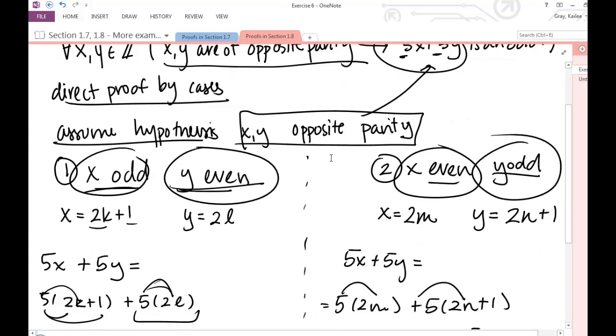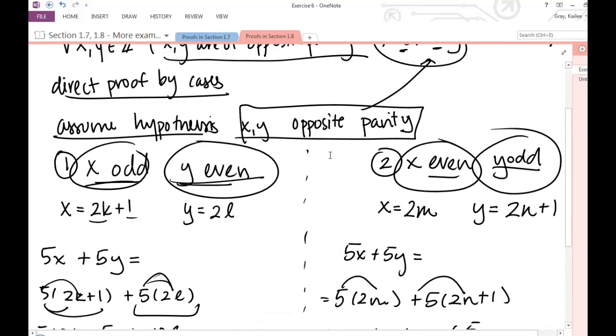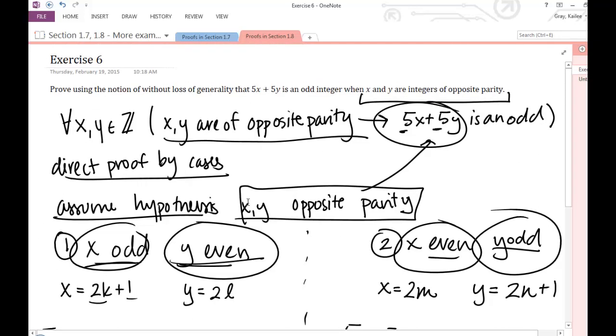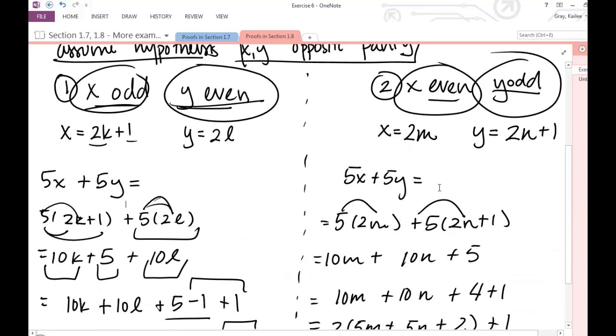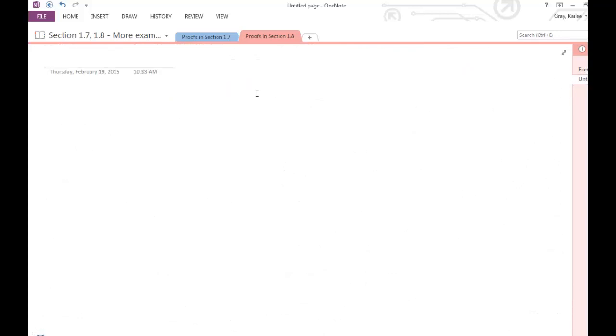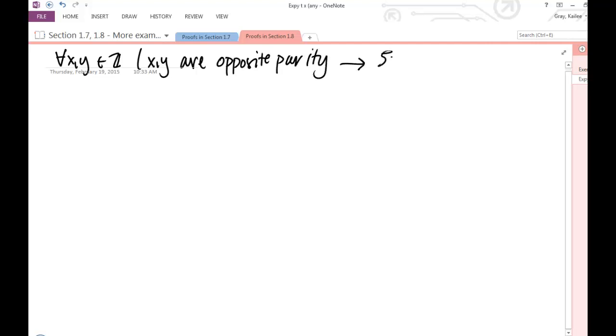So remember, when you're writing proofs, you always do some background work, some sketch work. See if you can figure it out before you go into writing. This is like your outline for your essay. So this is your outline. This is what you're going to follow when you're trying to write up the proof. And then you go into actually drafting it. So I'm trying to show that for any integer x and y, if x and y are of opposite parity, then I have that 5x plus 5y is even.